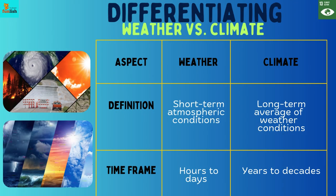Differentiating weather versus climate — Definition: Weather is defined as short-term atmospheric conditions, while climate is defined as the long-term average of weather conditions.